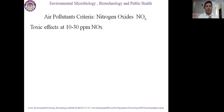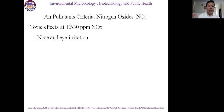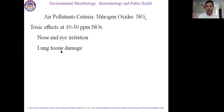We have to be careful about the concentration of nitrogen oxide in the atmosphere where we are living. If the nitrogen oxide concentration is very high, it can affect human health negatively. Initially, at 10 to 30 ppm, nose and eye irritation will occur in individuals living at high concentrations of nitrogen gases. Gradually, lung tissue will also be damaged. Pulmonary edema — swelling in the pulmonary system — will take place.